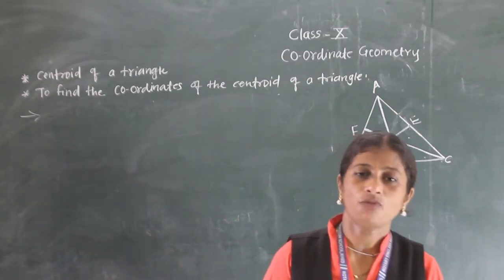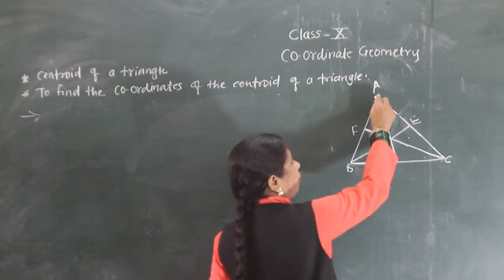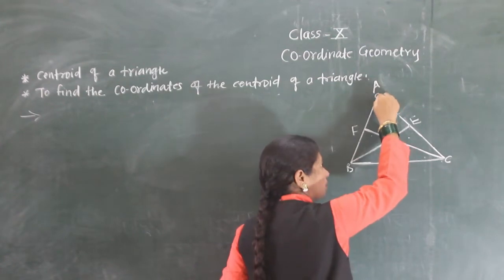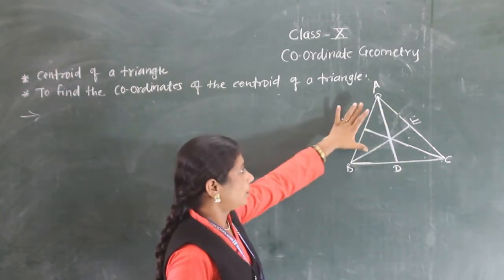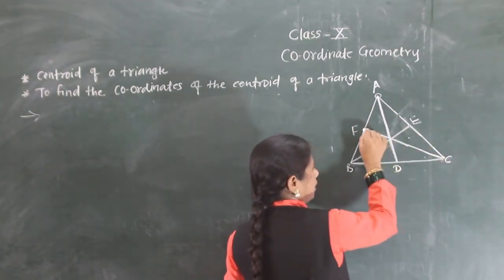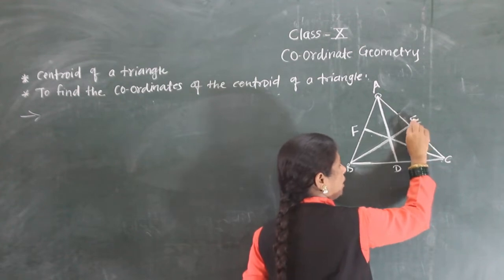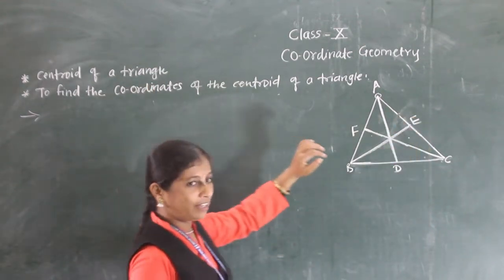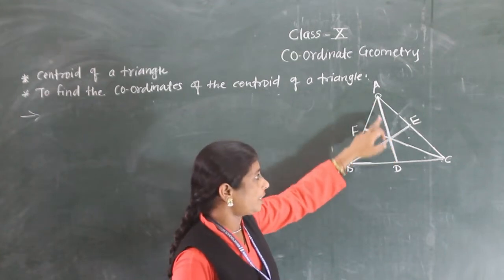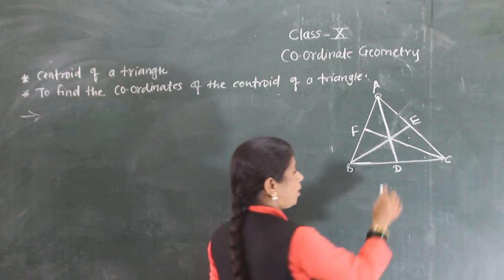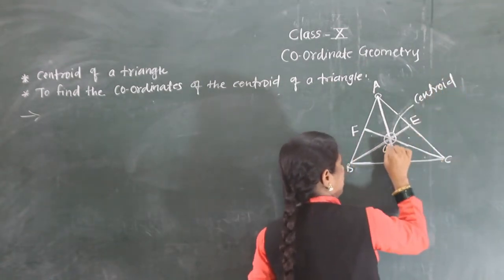First we will see what is meant by centroid. Here we have triangle ADC. From vertex A, we draw a line to D — AD is the median of the triangle. CF is another median, and BE is the third median. So what is the centroid of a triangle? When the three medians of a triangle intersect each other, the point of intersection of the three medians is called the centroid, and it is generally denoted by G.